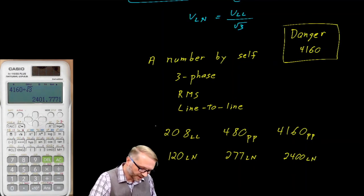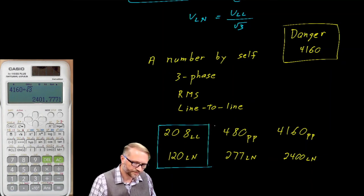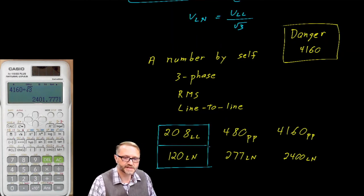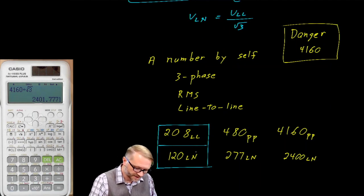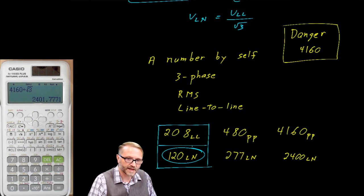Here's a parting thought: if you are in a commercial building, chances are very high that you are fed with a 208 line-to-line system. The outlet powering your computer is probably fed by one phase from that 208 going to neutral — that's 120 volts. The 480-volt system would be running the pumps and blowers that support the building.